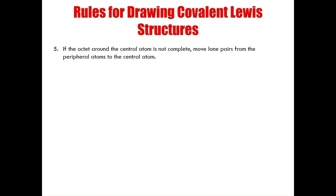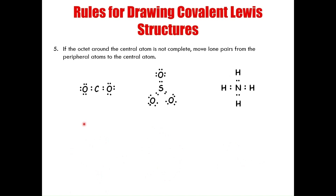The fifth rule relates to the octet rule. If the central atom does not have a complete octet, I need to move lone pairs from the peripheral atoms to the central atom to stabilize it. For carbon dioxide, carbon has only four electrons surrounding it — unstable — so a pair of electrons must be moved from each oxygen inward. Sulfur similarly has six electrons and needs another pair from one of its oxygens. Nitrogen in ammonium is actually stable with eight electrons. Hydrogen only needs two electrons since it is in period one.